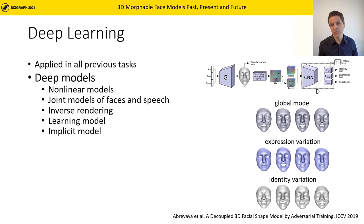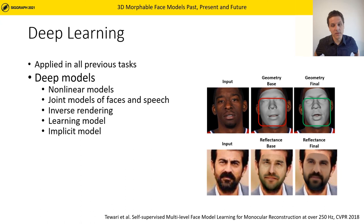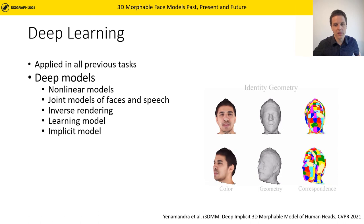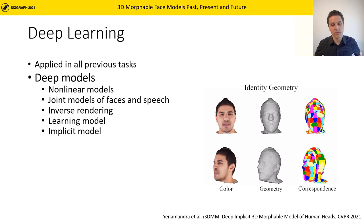We have also recently seen joint models of faces in motion and speech. The dramatic speed-up in inverse rendering also enables, for the first time, improving or learning models from 2D images. In addition, implicit models arose that drop some key modeling assumptions of 3D morphable models, like strict correspondence.